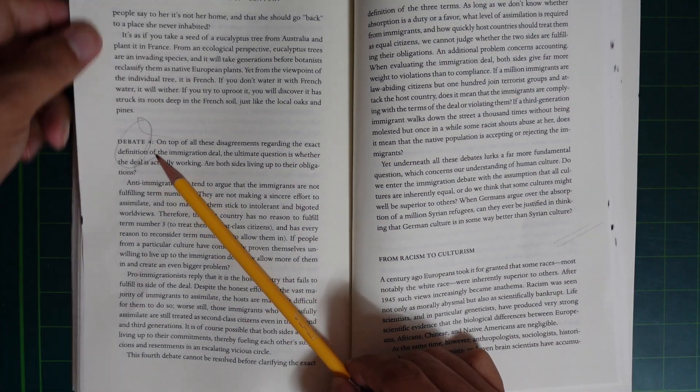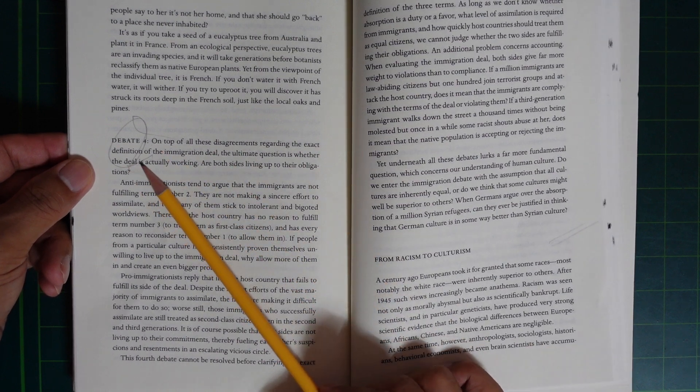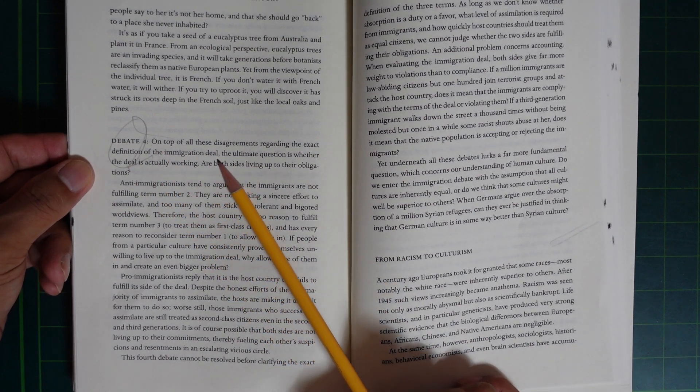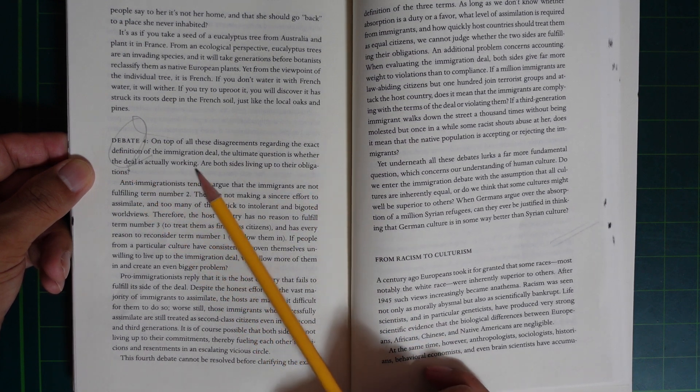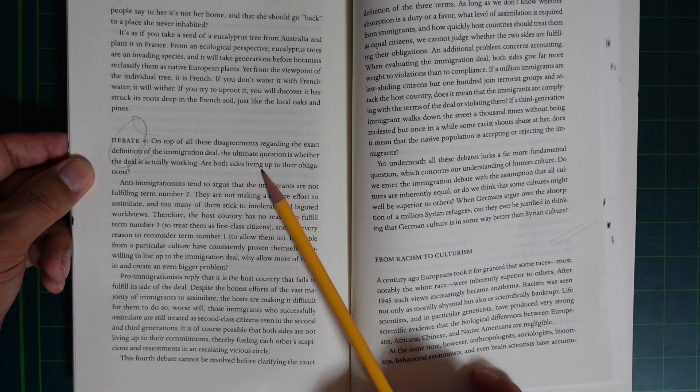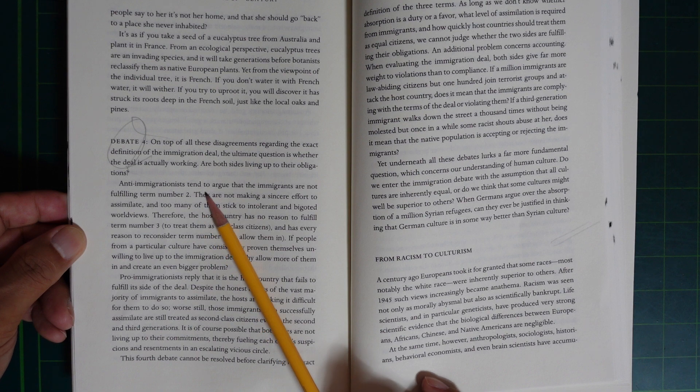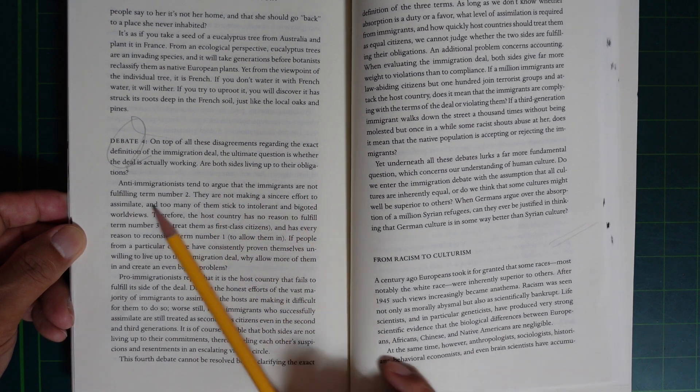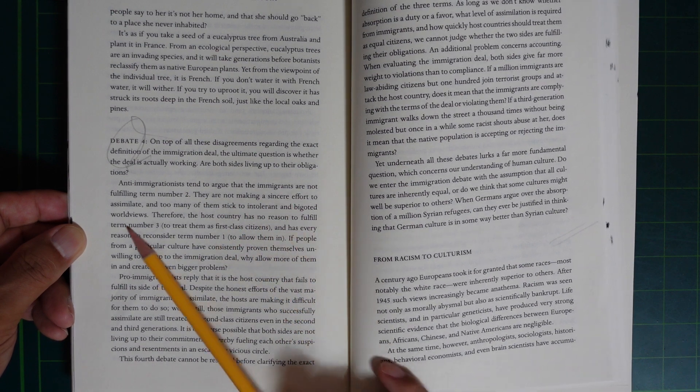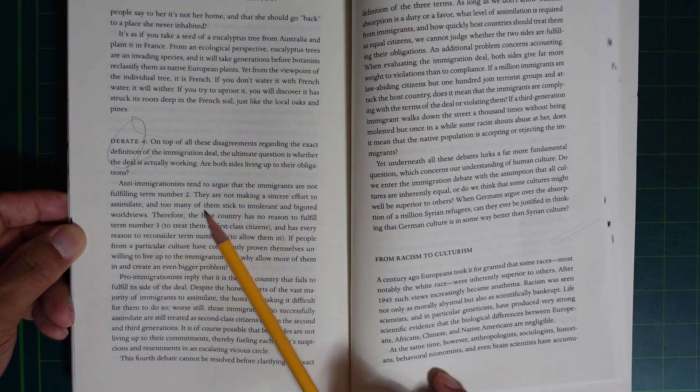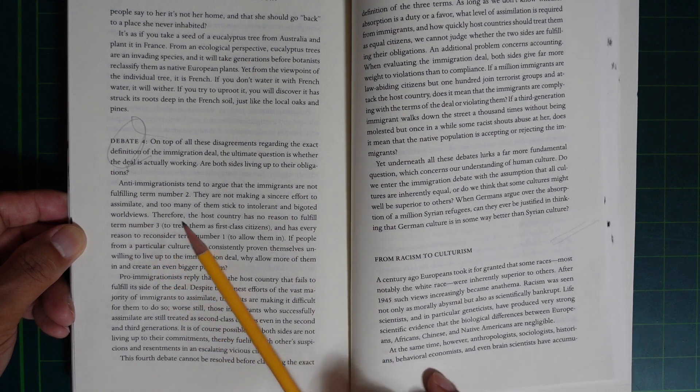Debate 4. On top of all disagreement regarding the exact definition of the immigration deal, the ultimate question is whether the deal is actually working. Are both sides living up to their obligations? Anti-immigrationists tend to argue that immigrants are not fulfilling term number 2. They are not making a sincere effort to assimilate, and too many of them stick to intolerant and bigoted worldviews. Therefore,